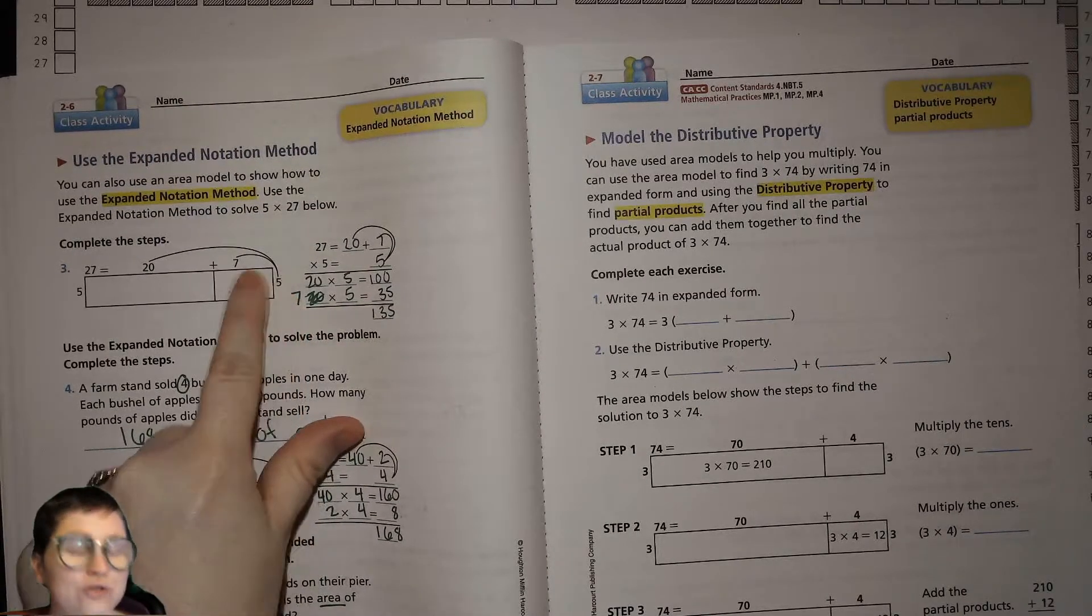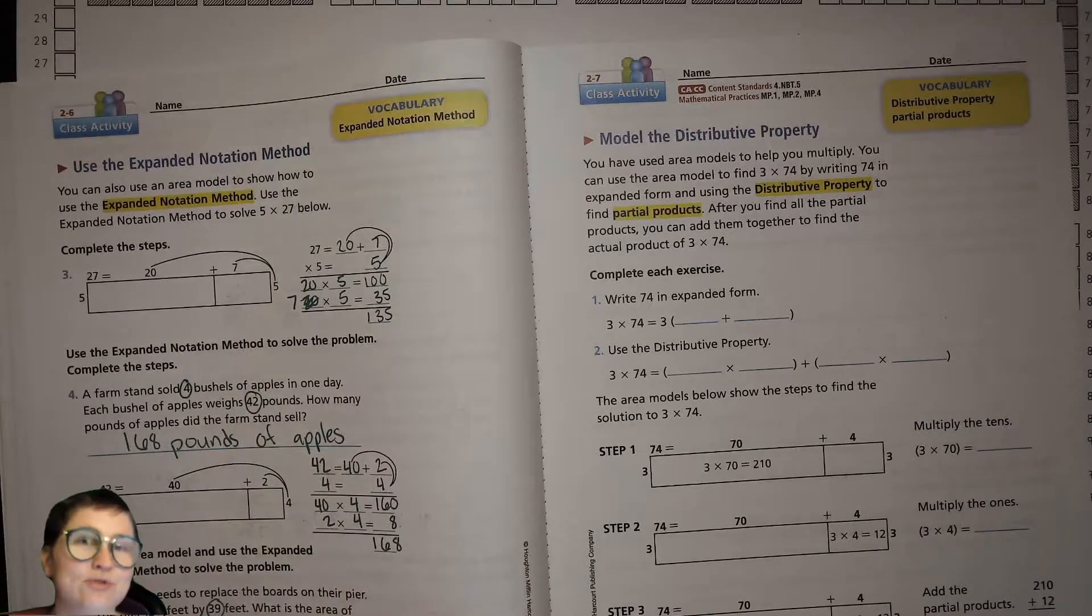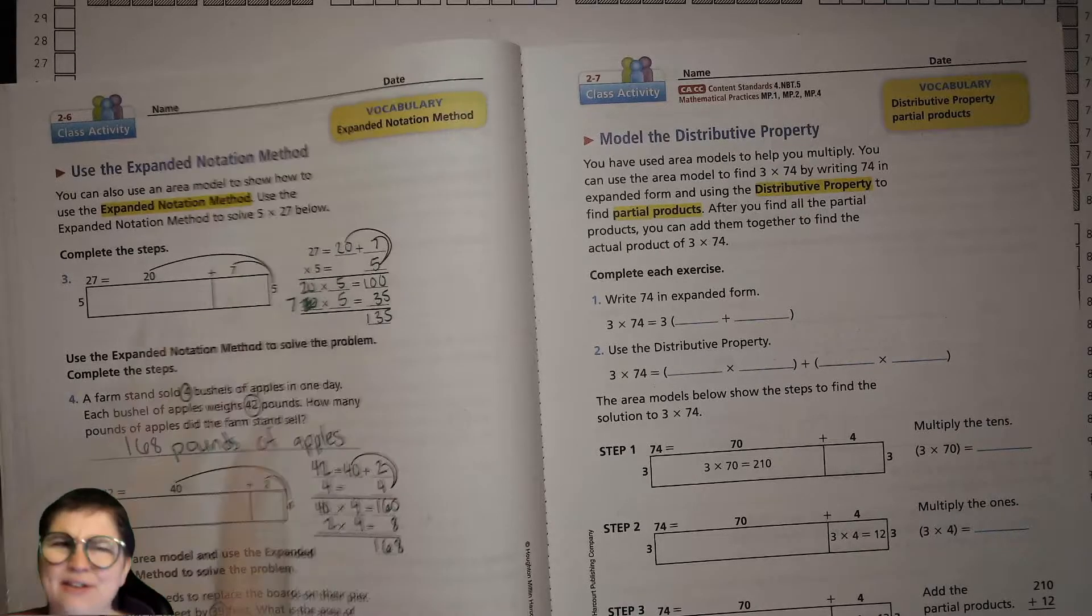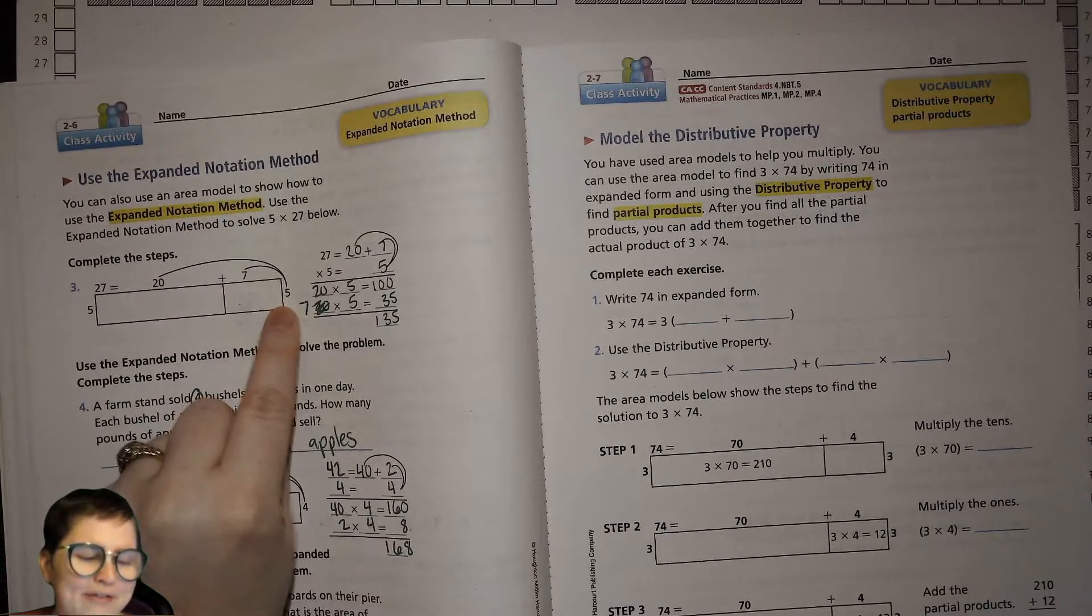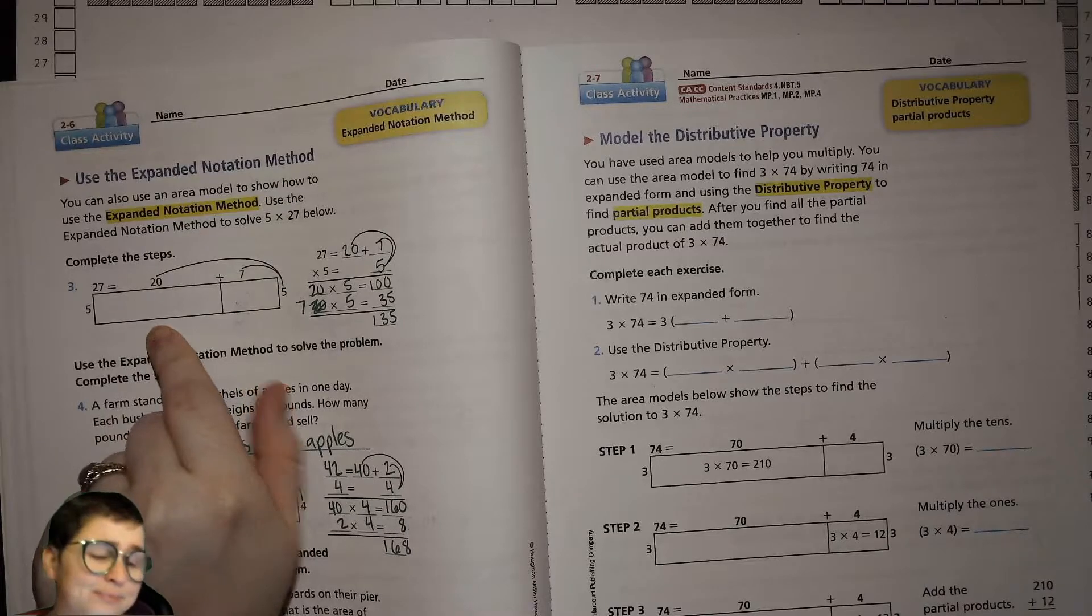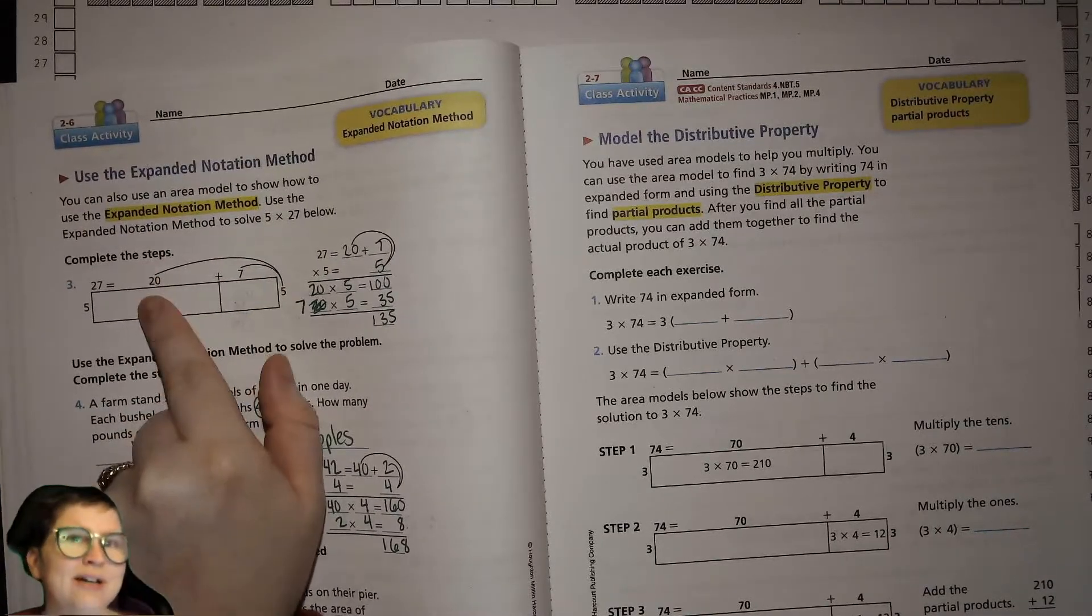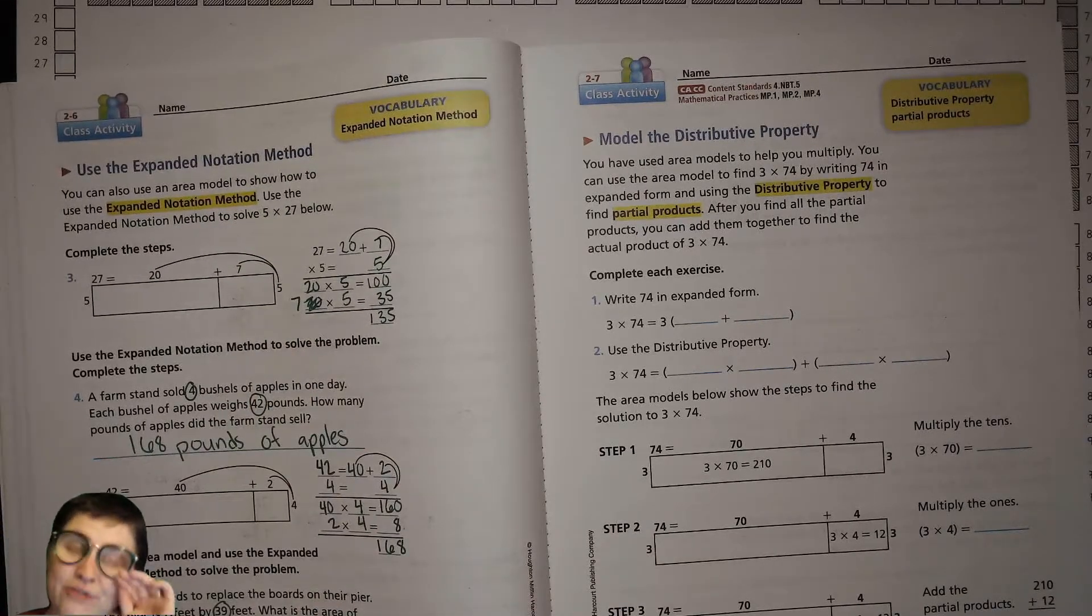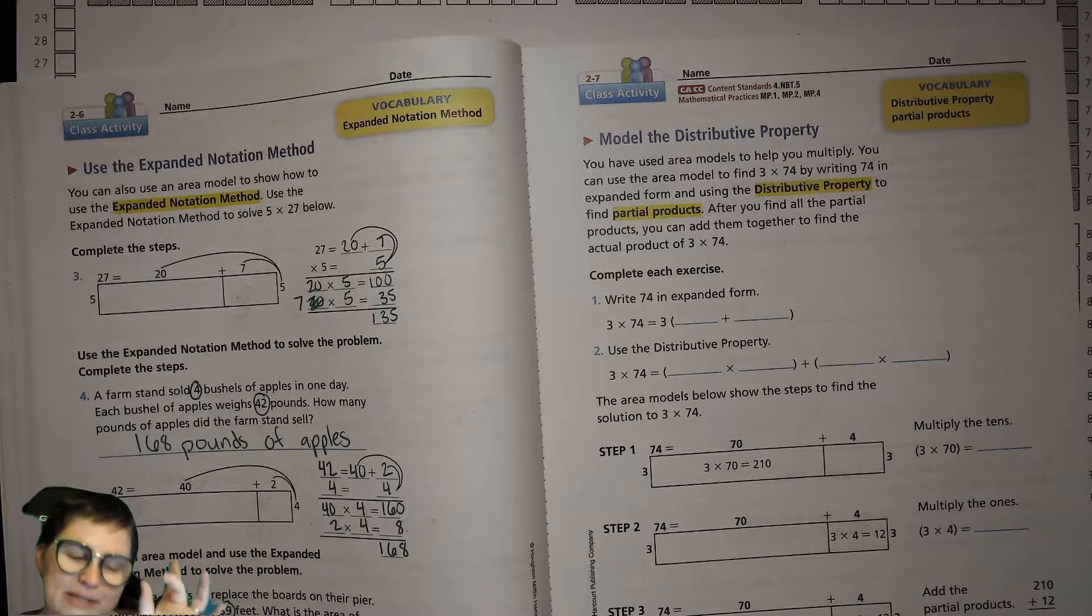That 5 you are distributing to both the 7 and to the 20, and that's because of the distributive property. If you only did it to the 7, then you'd really only be multiplying 5 by 7, not 5 times 27. So to correctly multiply you have to distribute that one factor to the entire other factor even if you've broken it up into different pieces.